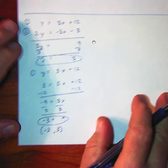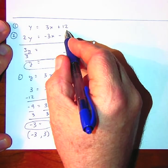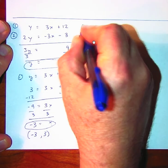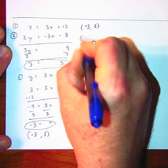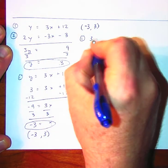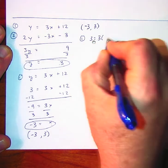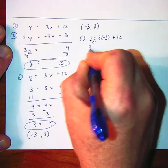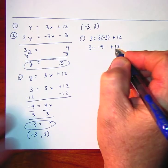To verify this is a solution, we'll plug it back into our original equations. When I plug in negative 3 for x and 3 for y into the first equation, you have 3 is equal to 3 times negative 3 plus 12. 3 is equal to negative 9 plus 12. And indeed, that is a solution.